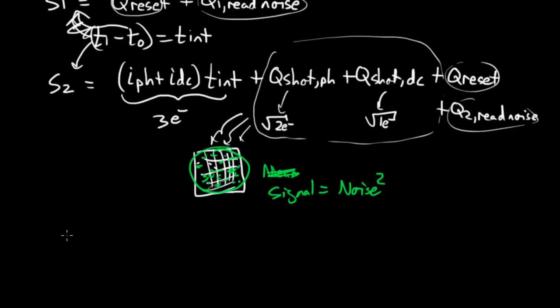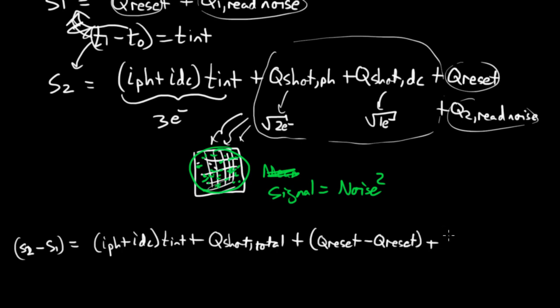Let me scroll down a little bit. Let's do sample two minus sample one. What do we get? Let me just write out some of it. I pH, the photo current plus I sub dc times t int.